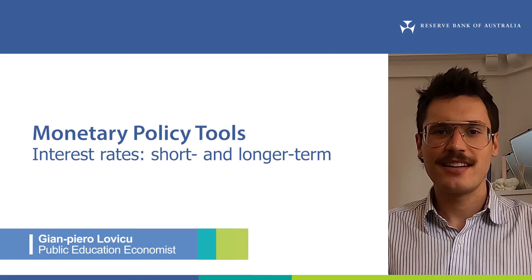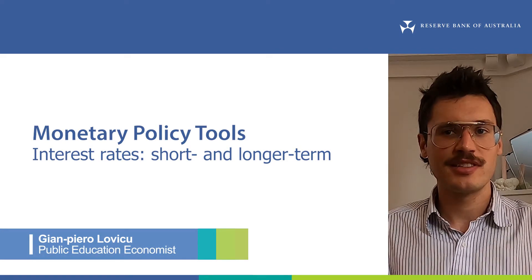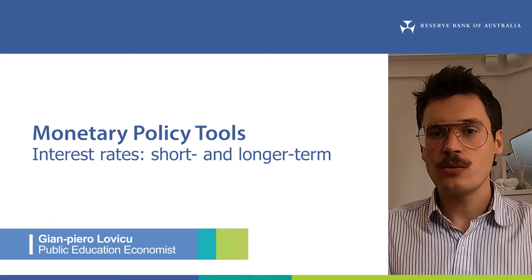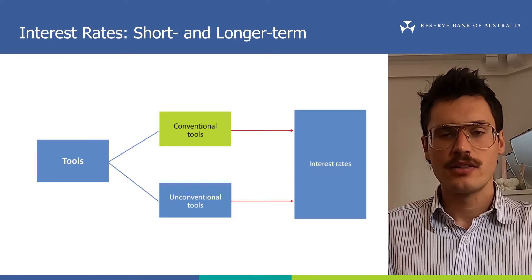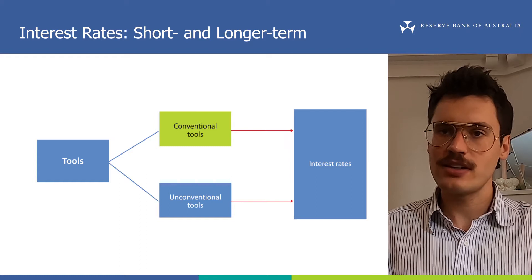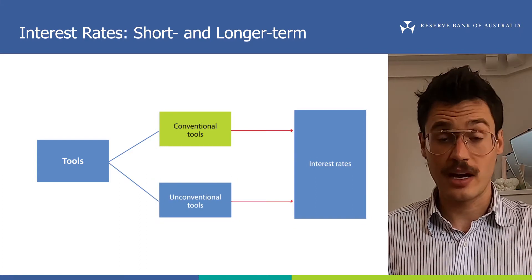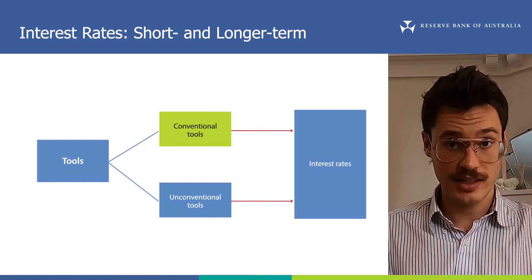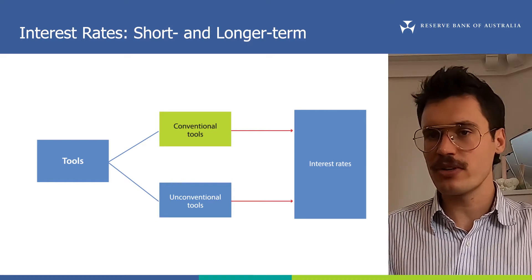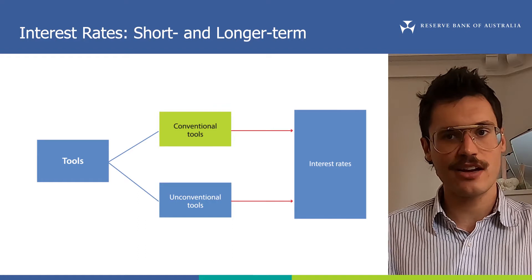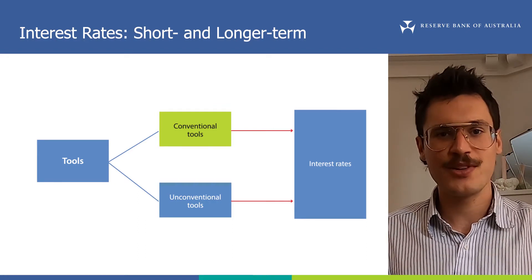Hi, I'm Gigi from the RBA. This video is part of our series on monetary policy. In it, we're going to talk about short and longer term interest rates. We need to return to interest rates so we can properly understand some of the unconventional tools the RBA uses to conduct monetary policy. Please watch our previous videos on interest rates, the cash rate, and bonds in the yield curve before proceeding with this video.